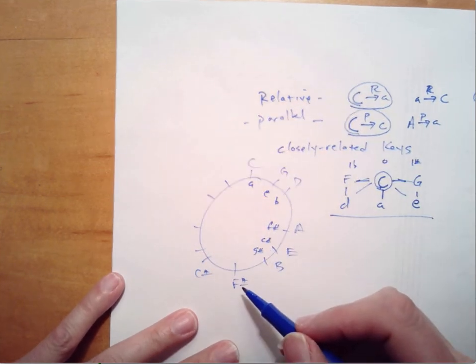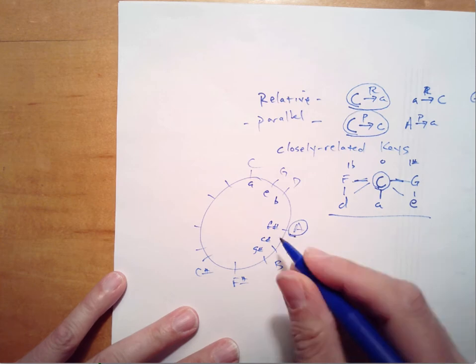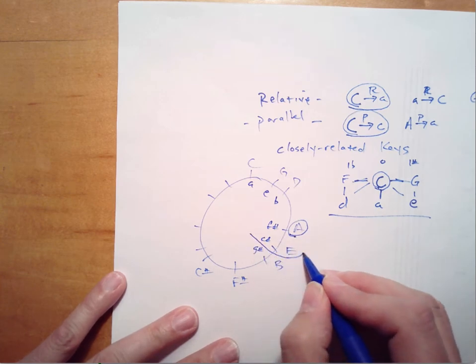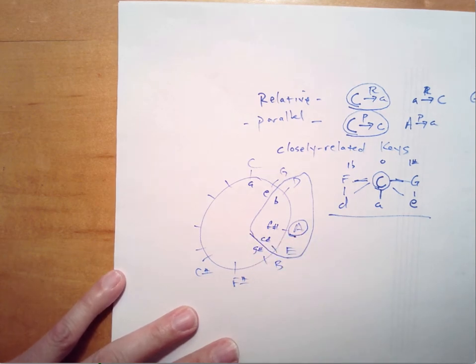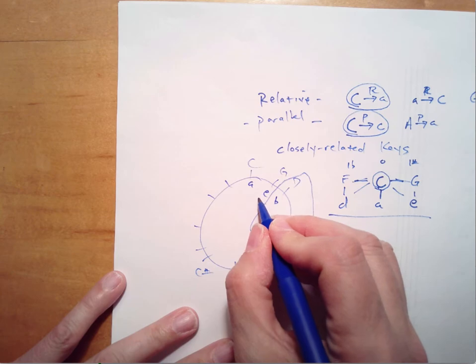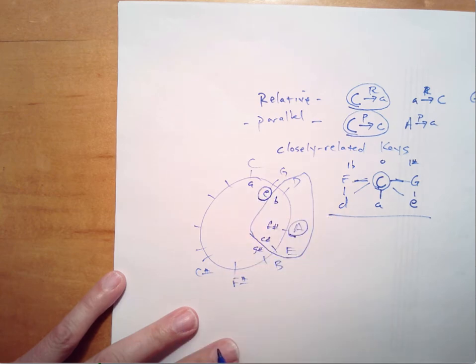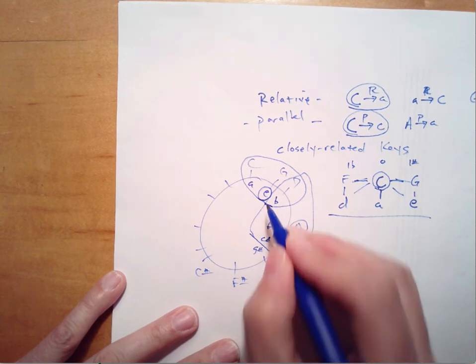So any of these keys, if I start on A, the closely related keys are all the keys within one notch on the 12 hour clock face. Likewise, if I wanted E minor, the closely related keys would be these keys. It's a fairly simple concept.